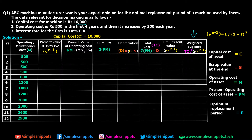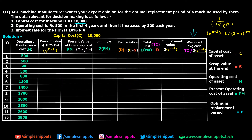Moving to the present value column at 10% per annum — this is the v^(n-1) column. For year 1 it is 1, for year 2 it is 0.9091, for year 3 it is 0.8264. You substitute the year number n into the formula with r = 10% constant. I've now calculated all v^(n-1) values for each respective year.